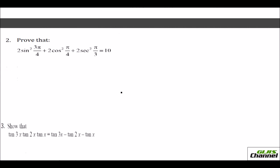Now let us look at the second problem. You are to prove that the left-hand side expression is equal to 10. So I am directly going to apply special values. This is nothing but 2 sin²(3π/4). Now, 3π/4 is 135°, and we don't know the value for this directly. So I write sin(3π/4) as sin(π − π/4), which is still 3π/4, and I can bring the square outside.